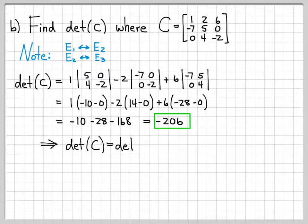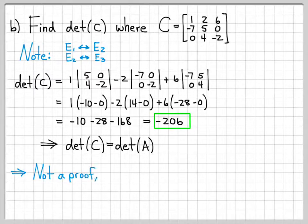That's the exact same value we had for the determinant of A. So we found that the determinant of C equals the determinant of A. This is interesting. The only difference with B was that B had one row interchanged. The only difference between A and C was that C had two rows interchanged. The magnitudes of the determinants of B and C were the same — it was just the sign that was flip-flopping.